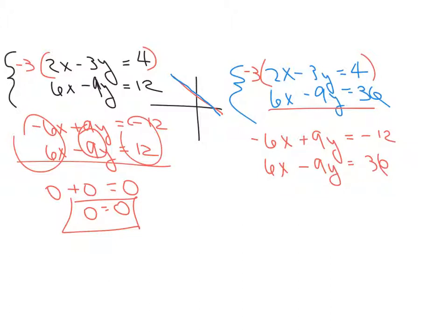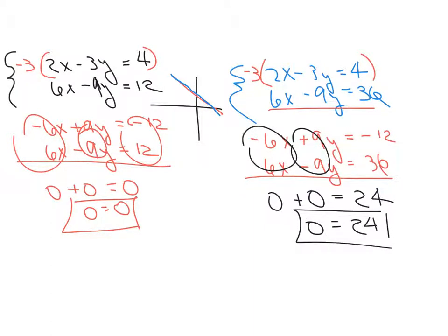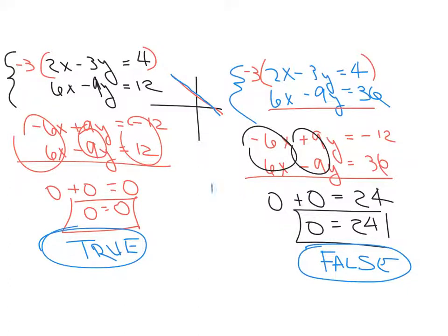alright, so let's see what we have here we add those two together those disappear those also disappear and that equals 24 so we get 0 equals 24 alright, so what happened here my variables again disappeared my x and my y disappeared but the difference is this over here is a true statement this over here is a false statement so whenever your variables disappear and you get a true statement the lines are on top of each other on the right hand side whenever the variables disappear and you get a false statement the lines are parallel to each other they do not cross they have nothing in common okay so this system is inconsistent because of that and this one is dependent because of that